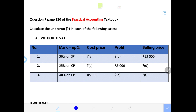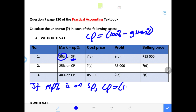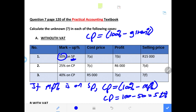Now let us calculate what is missing. We have a markup percentage of 50% and it is on selling price. The moment a markup percentage is on selling price, cost price will be equal to 100% minus the given percentage. That means if markup percentage is on selling price, your cost price is equal to 100% minus the markup percentage. So in this case, our cost price will be 100% minus 50%, which equals 50%.